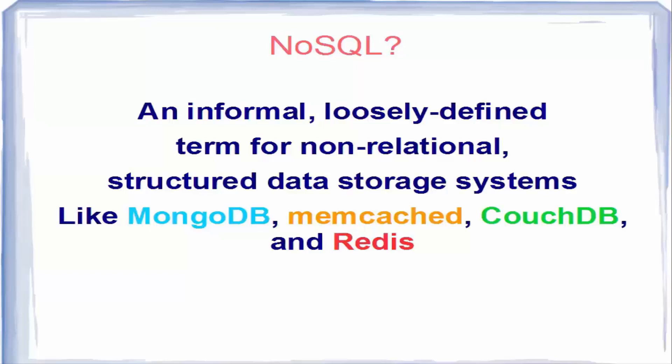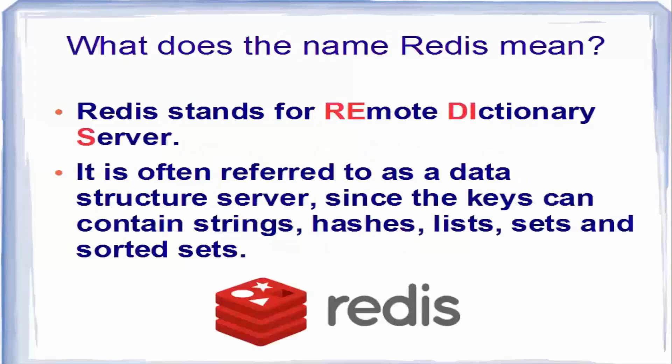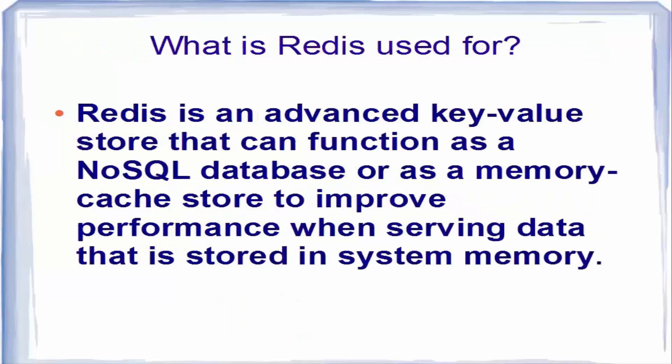Like MongoDB, Memcached, CouchDB, or Cassandra, Redis allows the user to store vast amounts of data without the limits of relational databases. In NoSQL databases, data can be stored in a non-relational way. The name Redis stands for Remote Directory Server. It is often referred to as a data structure server since the keys can contain strings, hashes, lists, sets, and sorted sets.